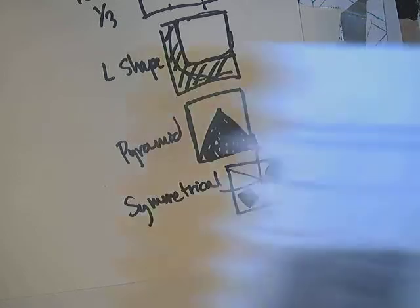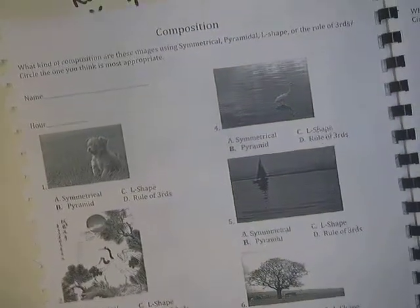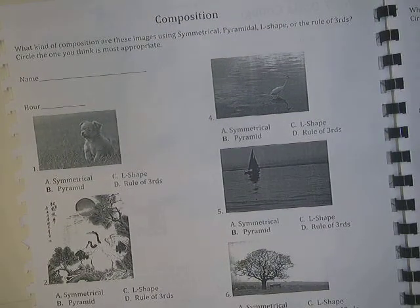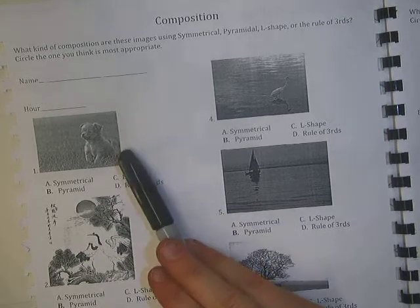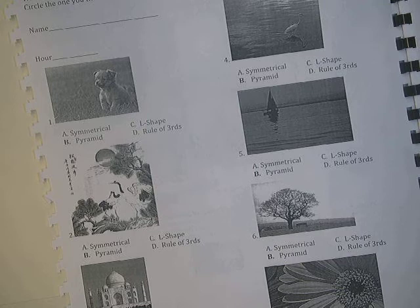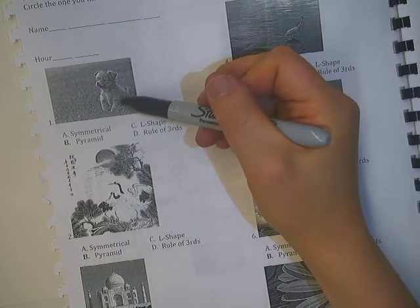So your assignment that we had associated with this is we did this exercise. This is on pages 39 and 40 in your book. And what I want you guys to do is go through each of these and list if you think it's L-shaped, symmetrical, rule of thirds, or pyramid.